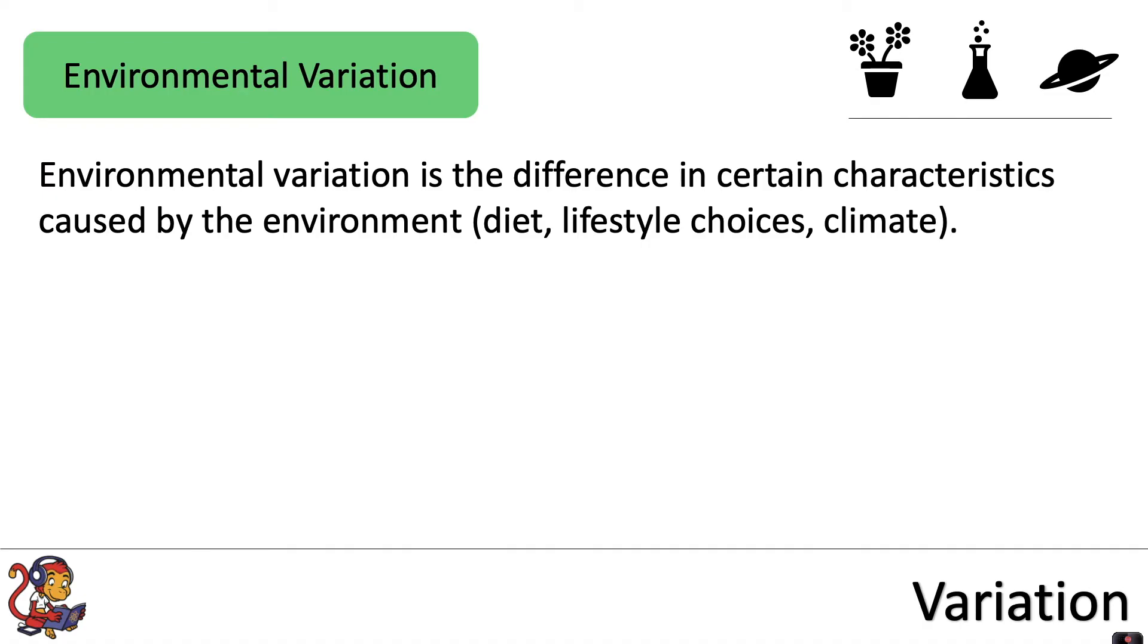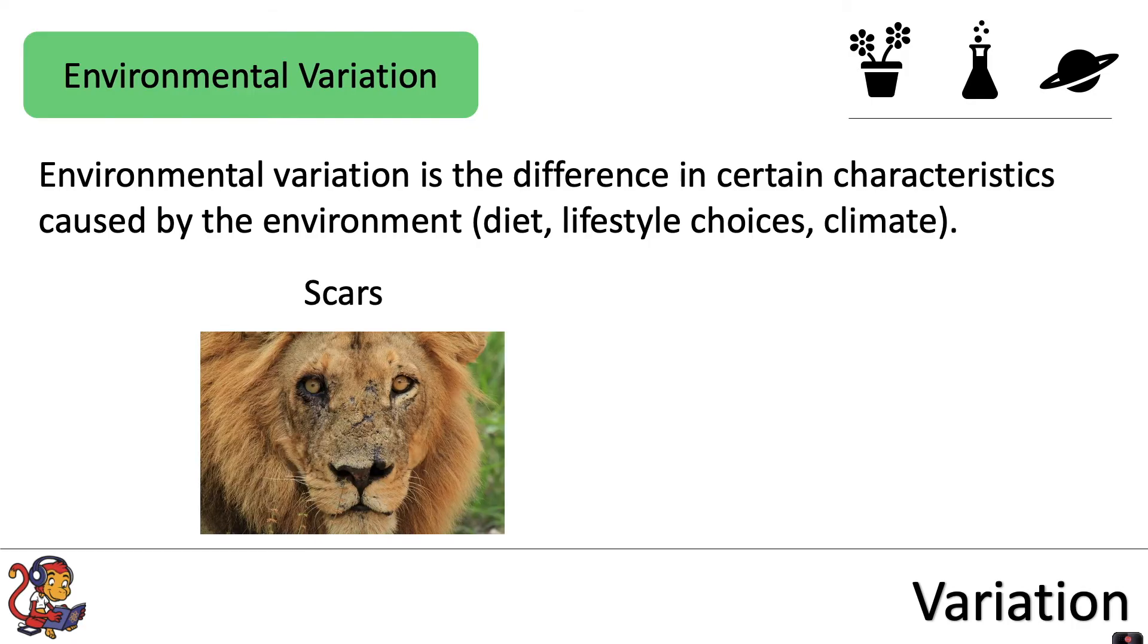Examples of characteristics determined by environmental variation include things such as scars. This animal was not born with scars, but due to its behavior and activity, it now shows environmental variation. So it's different to other organisms due to the scars on its face.